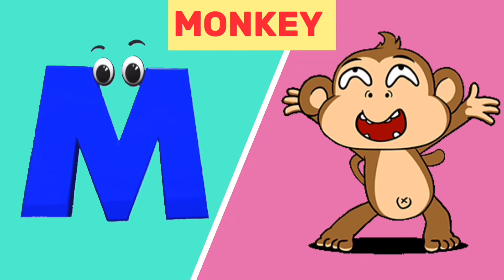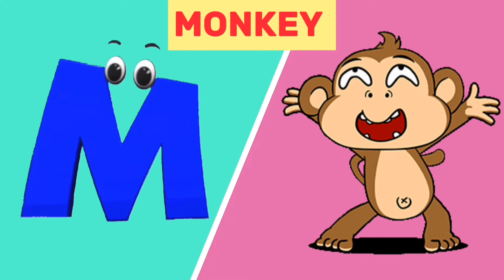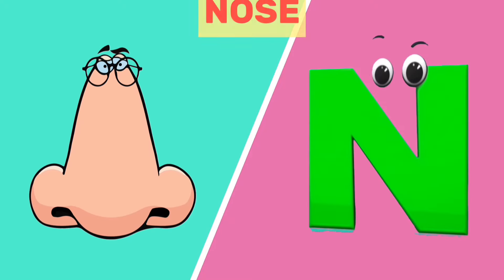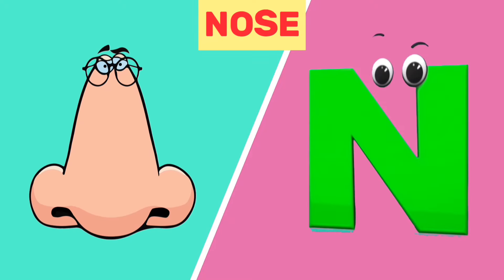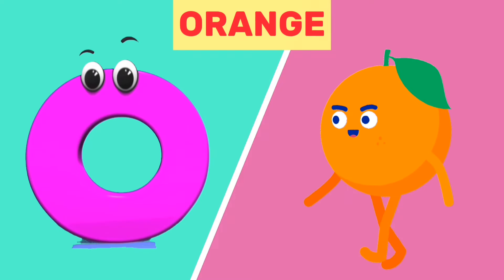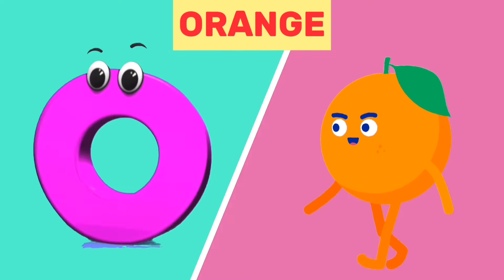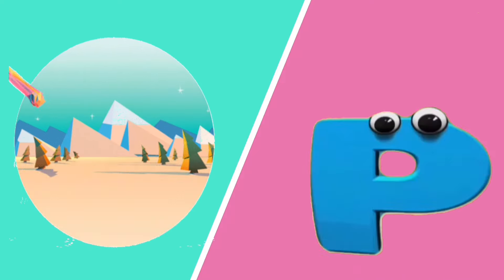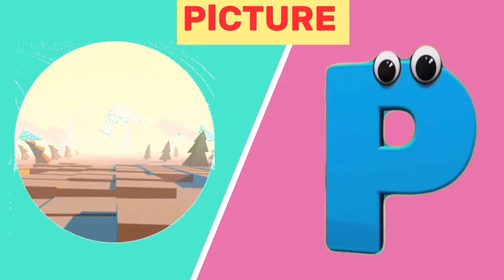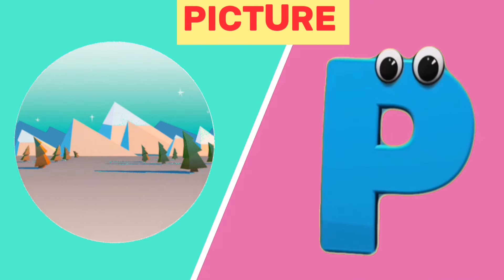M is for monkey, m, monkey. N is for nose, n, nose. O is for orange, o, orange. P is for picture, p, picture.